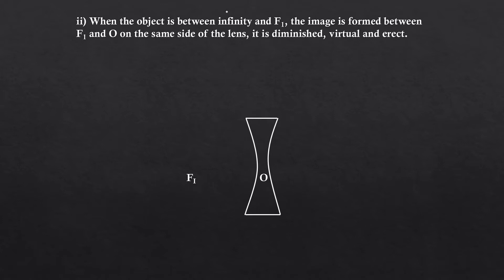The second ray diagram is object placed in front of the concave lens. Ray of light from the object falls on the lens and gets diverged. It can be extended backwards.